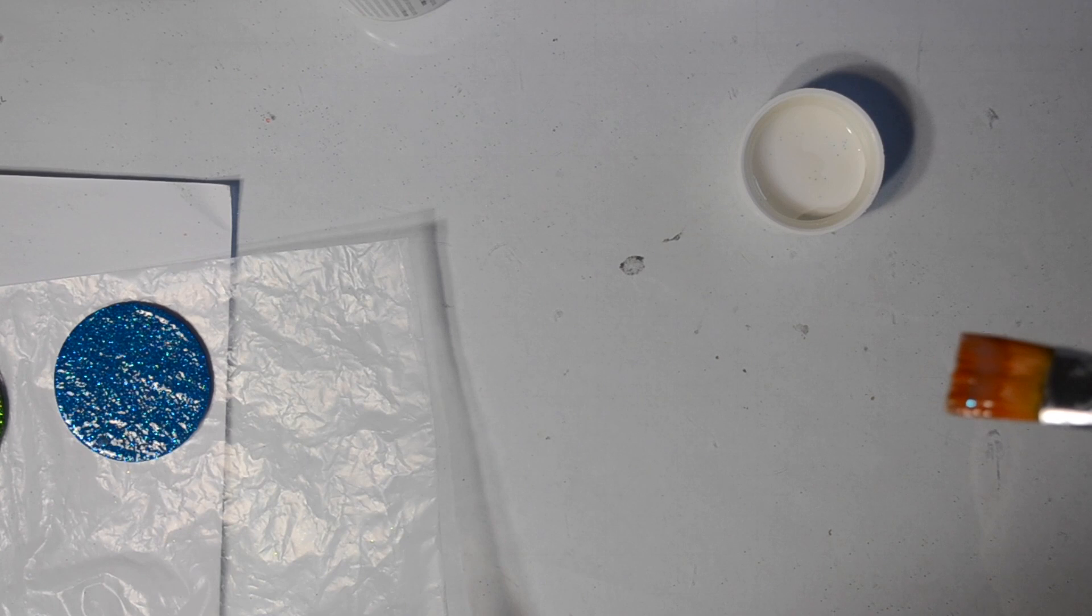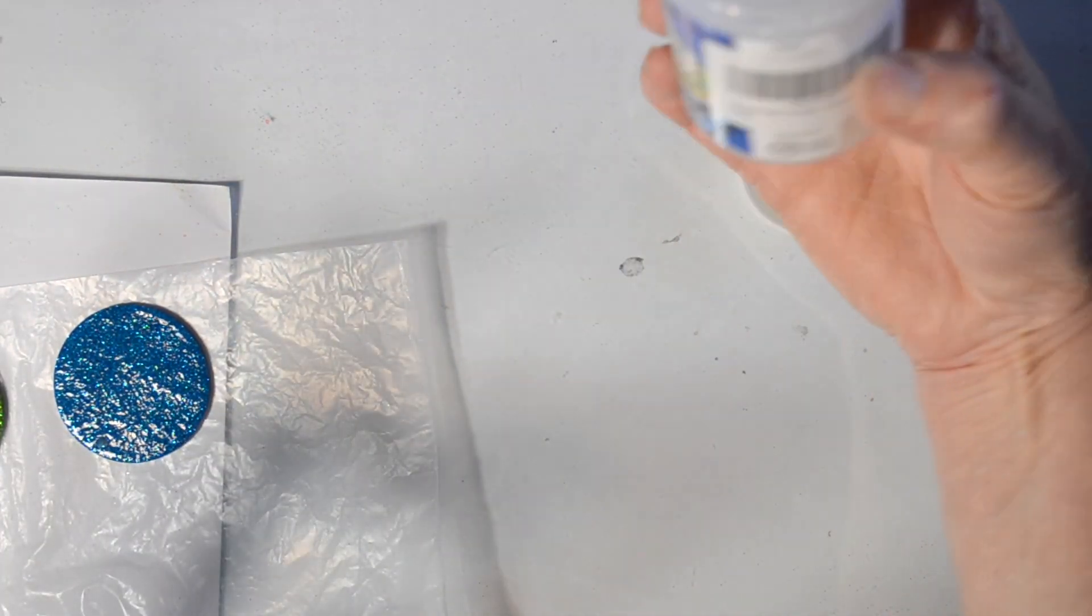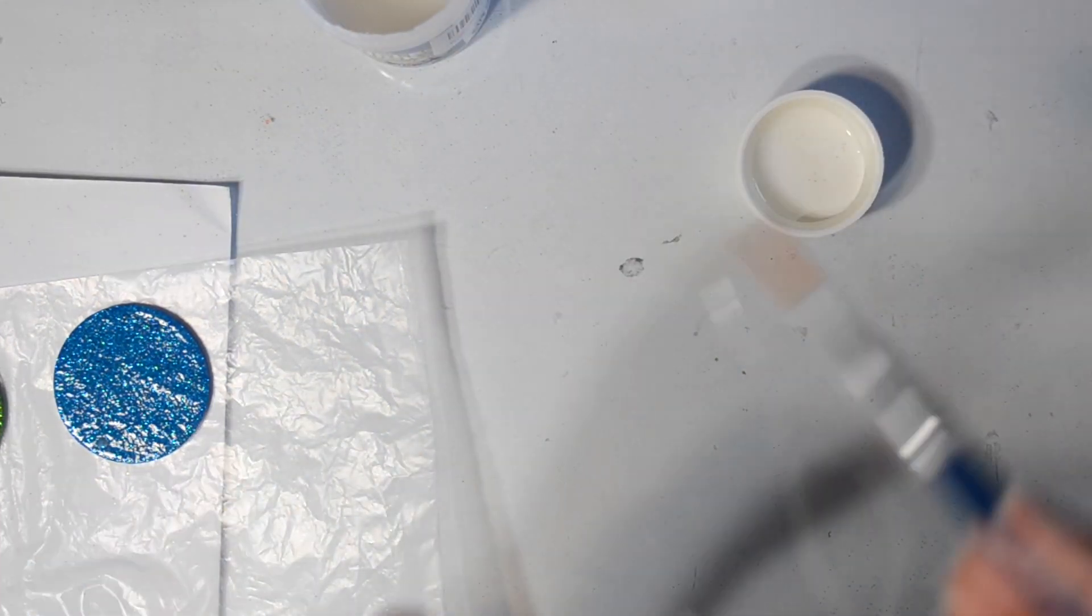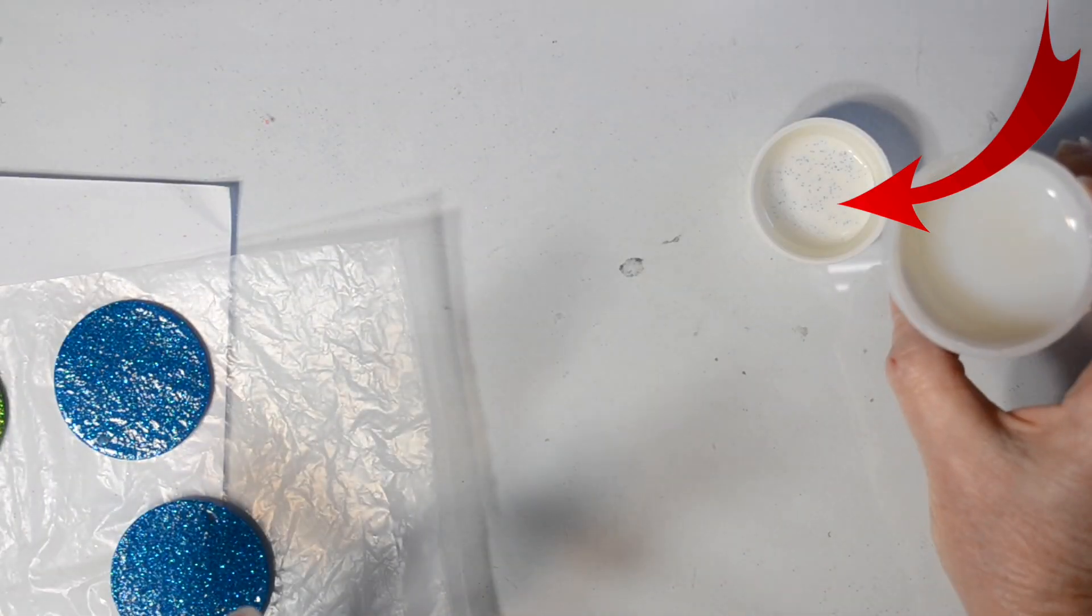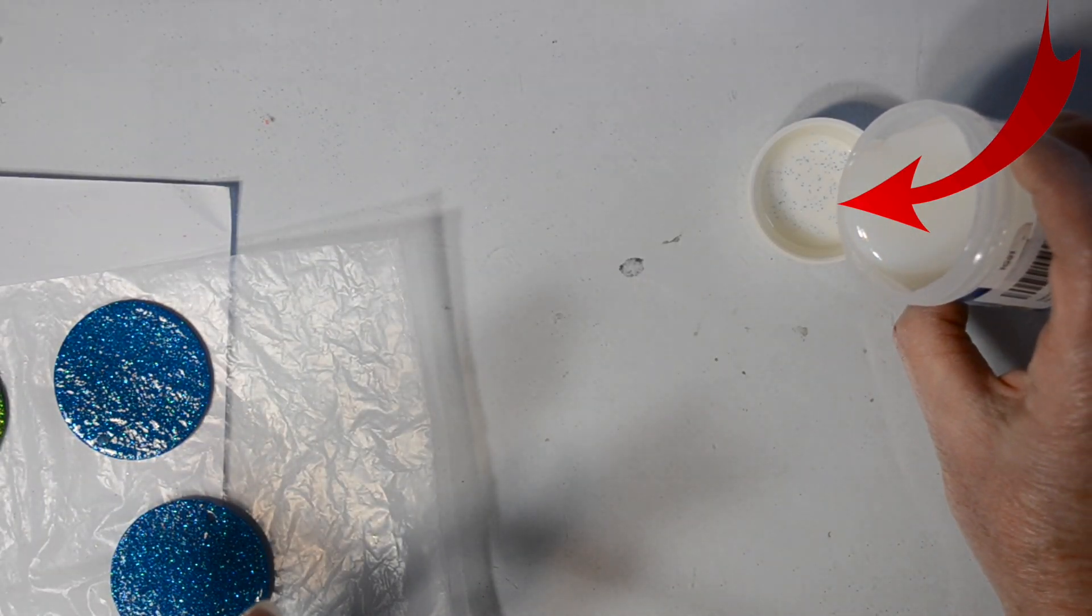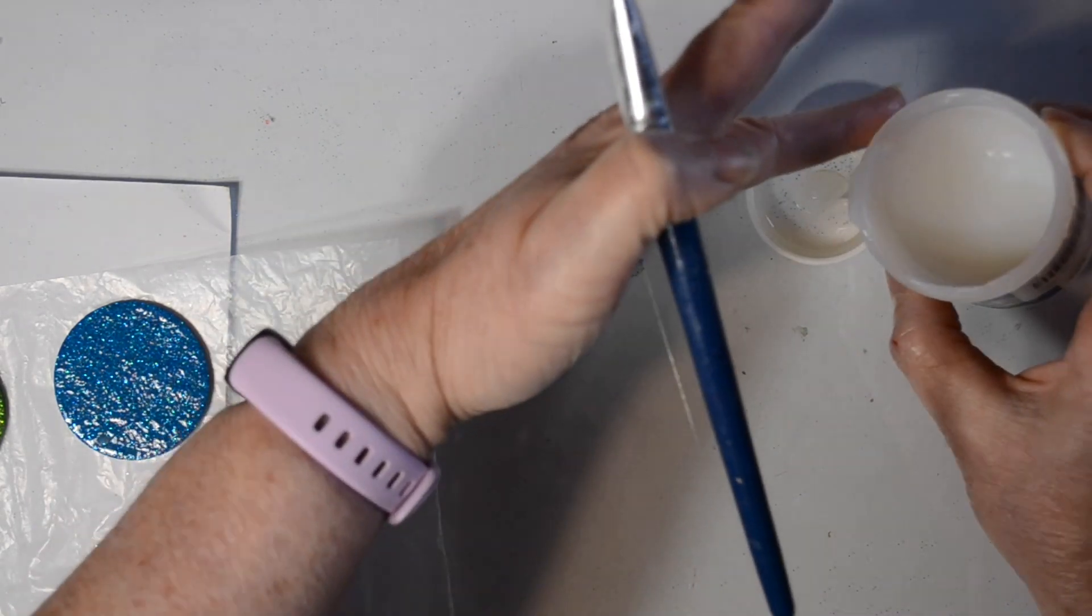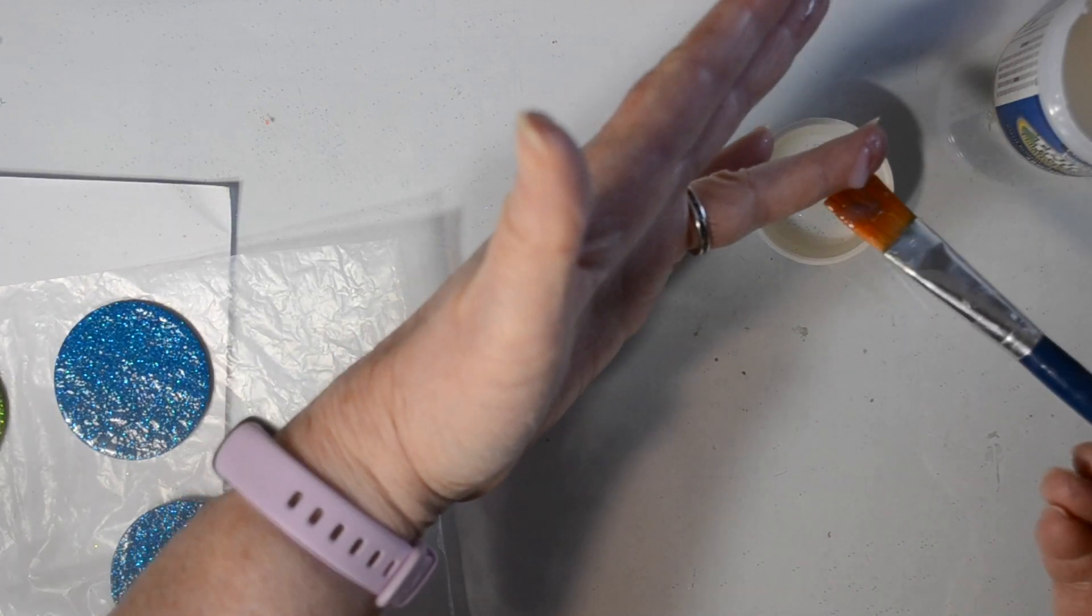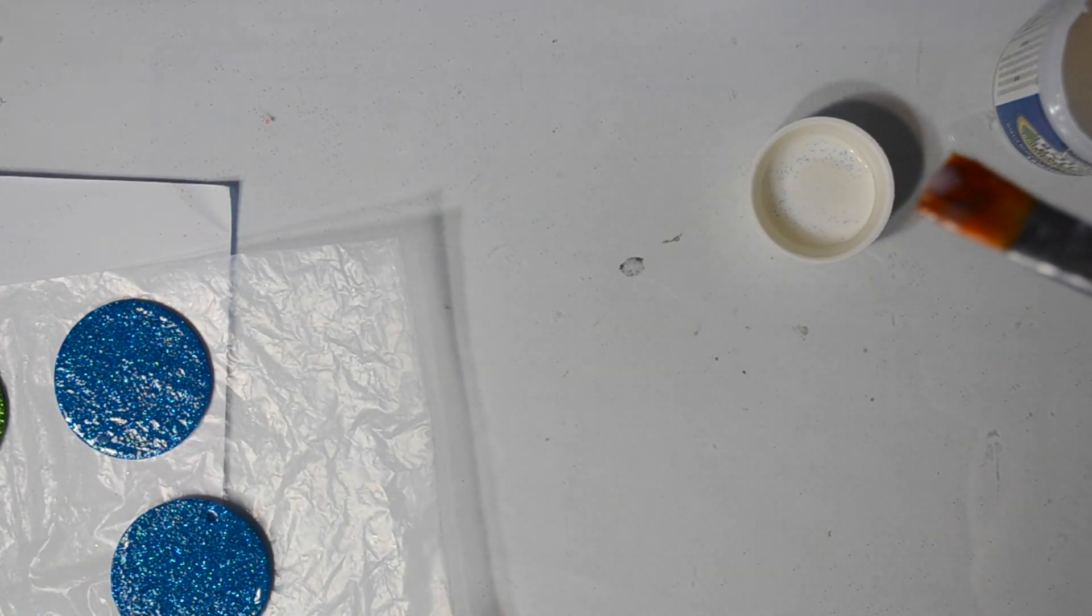Now I'm going to come in and I'm going to seal this with some triple thick brilliant brush-on gloss glaze. This is from DecoArt. I'm showing you there with that red arrow that the sparkles are still coming off the keychain. I'm pouring this into another container. I am not dipping my brush directly into my jar of this triple thick gloss.